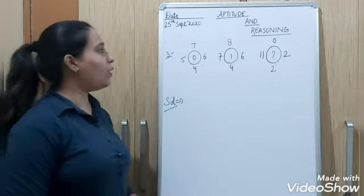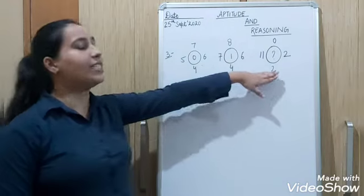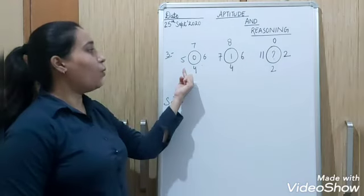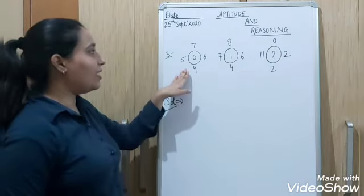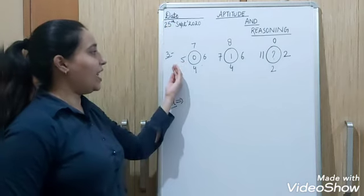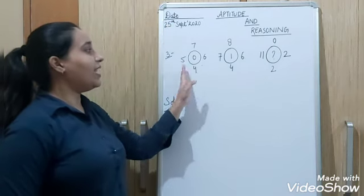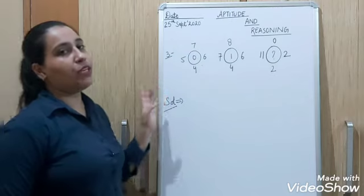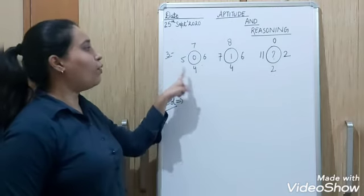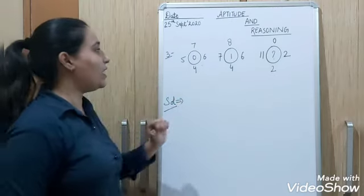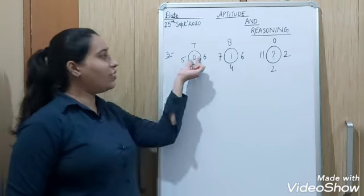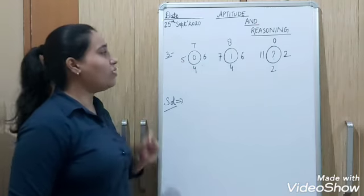Now see the question number 3 here. 3 circles are given. First circle has on top, bottom, left and right, in all 4 directions you have numbers given: 7, 4, 5, 6. Same in all the 3 circles. Inside the circle there is 0. See how the 0 will come.